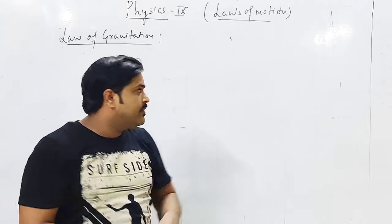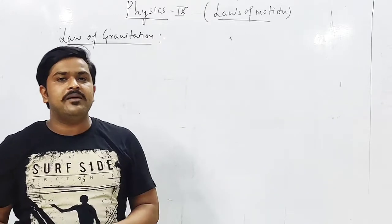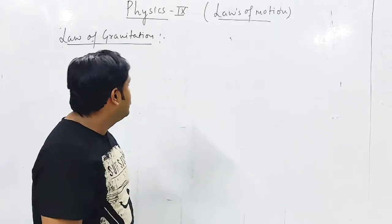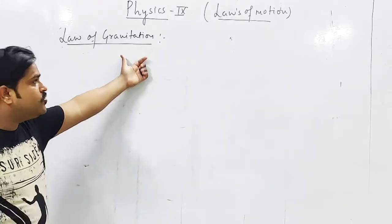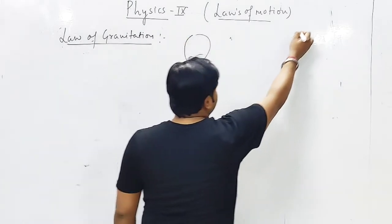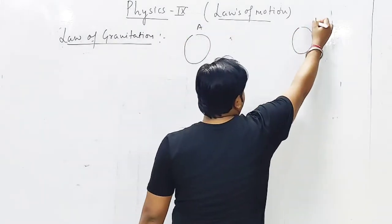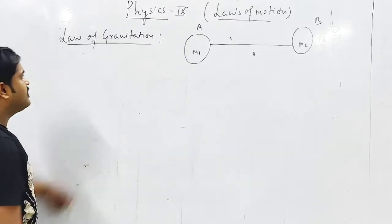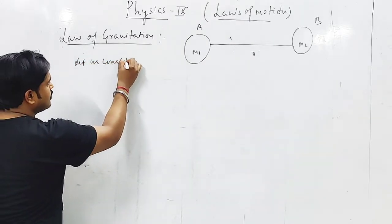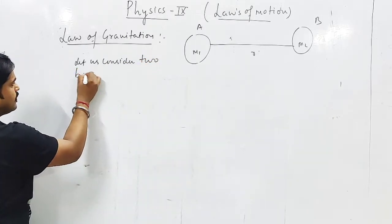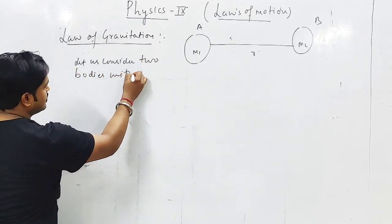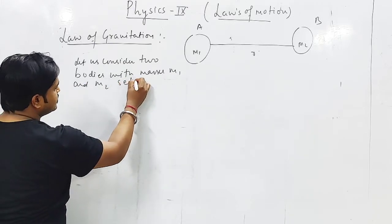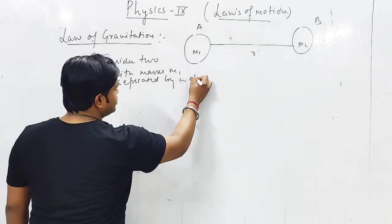Basically, we will consider two bodies. I am going to tell you about derivation. Later on, I will be giving you the definition and if you ask to state the law, you'll have to write the statement. For this derivation, we will assume two bodies. Let one body be A and other body be B with masses M1 and M2 separated by distance R.